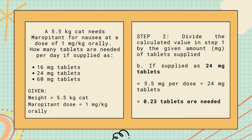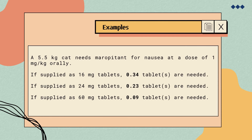For letter B, if supplied as 24 mg tablets, dividing 5.5 mg by 24 mg gives 0.23 tablets. In conclusion: a 5.5-kilogram cat needs maropitant at 1 mg/kg orally. If supplied as 16 mg tablets, 0.34 tablet is needed. If supplied as 24 mg tablets, 0.23 tablet is needed. And if supplied as 16 mg tablets, 0.09 tablet is needed.